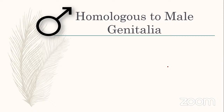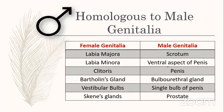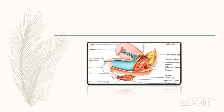Female genitalia homologues to male genitalia: labia majora is homologous to the scrotum; labia minora to the ventral aspect of the penis; clitoris to the penis; Bartholin's duct to the bulbourethral gland; vestibular bulbs to the single bulb of the penis; and Skene's gland to the prostate. These are common short-answer exam questions.